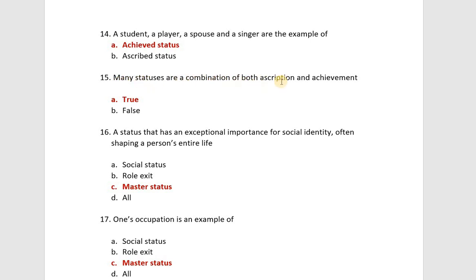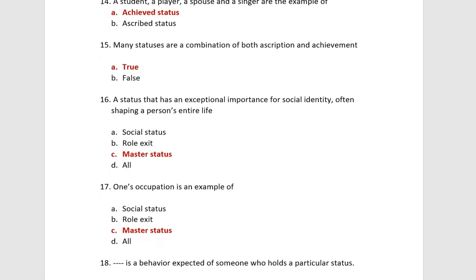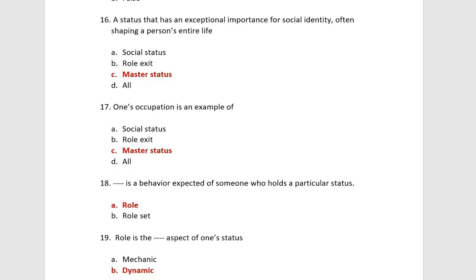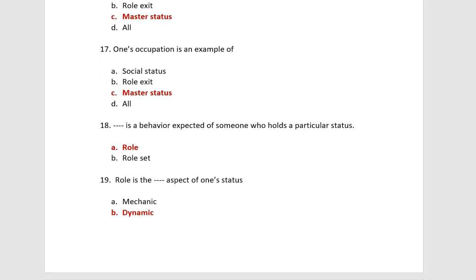Many statuses are a combination of both ascribed and achieved status. A status that has exceptional importance for social identity, often shaping a person's entire life, is called master status. This is the definition of master status. One's occupation is an example of a master status.